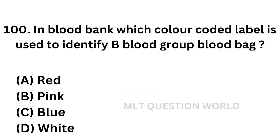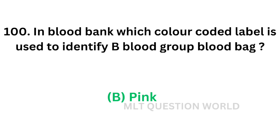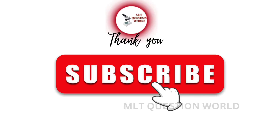Question number 100: In a blood bag, which color coded label is used to identify B blood group? Option A: red. Option B: pink. Option C: blue. Option D: white. For A group, yellow label is used. For B group, pink label is used. For O group, blue label is used. For AB, white label is used. So the correct answer is Option B, pink — pink label is used for B blood group. Today we are winding up. Please subscribe the channel. Thank you for watching; you can watch the previous videos in the playlist via links in the description box.